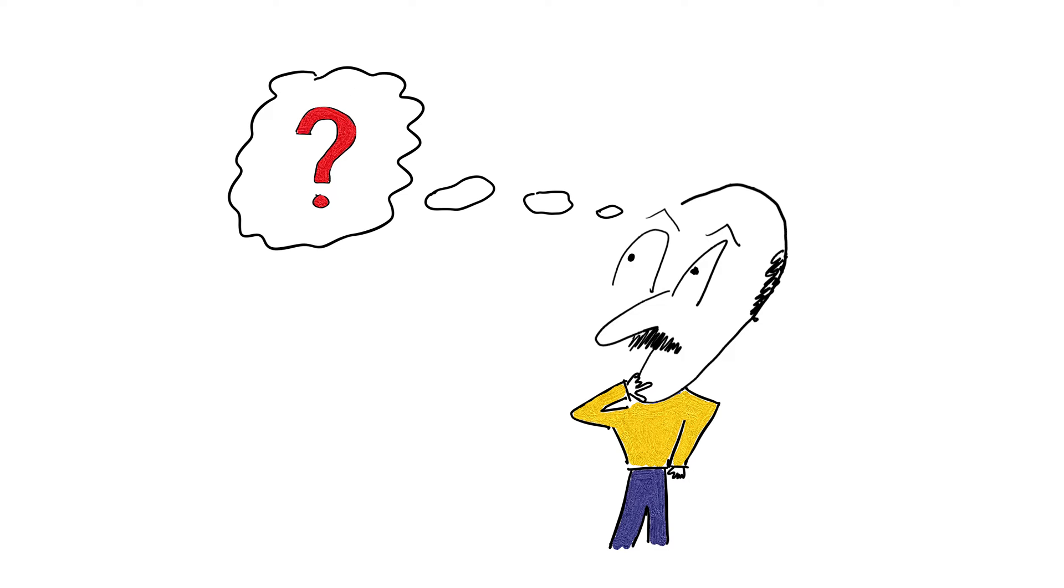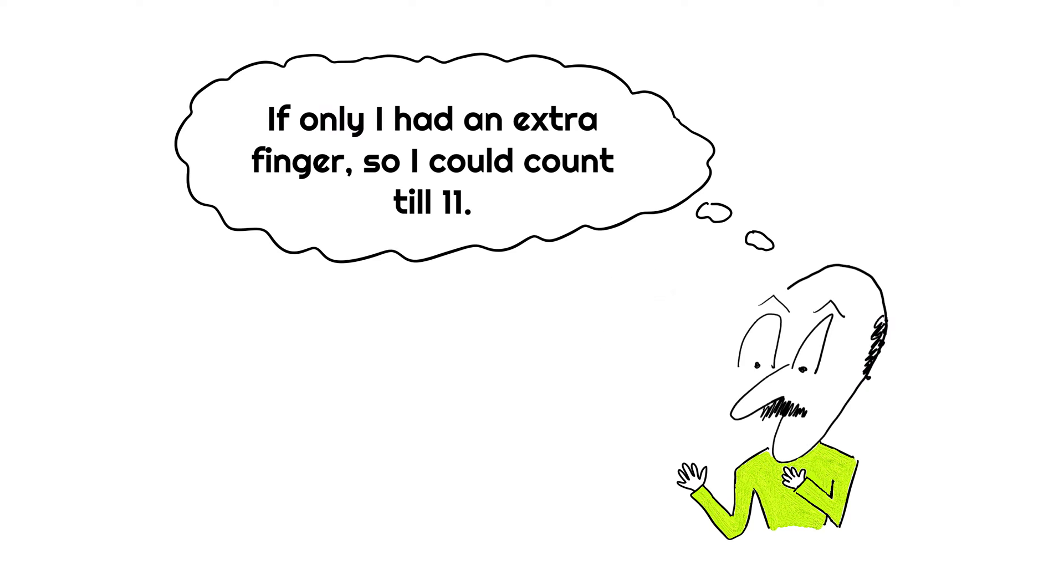So the question is, who decided on a minute being 60 seconds and not 10 or 100? In today's world, our number system is based on 10, a system that's been around for a while because it made it easy for human beings to count using their fingers.